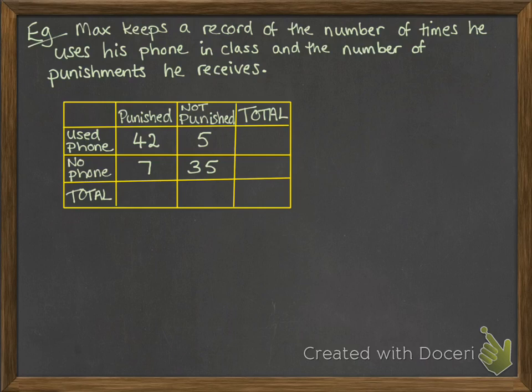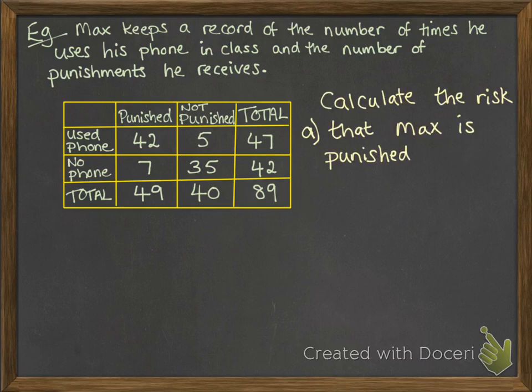So first thing is to fill in the totals. And then we can work out some stuff with this table. So calculate the risk, first of all, that Max gets a punishment. So we're looking at that 49 was how many times he was punished out of 89 total. So that's just a straightforward absolute risk. 49 divided by 89. He's got a 0.55 chance of receiving a punishment in lessons.